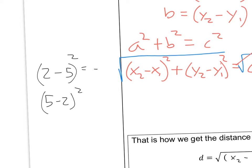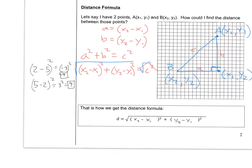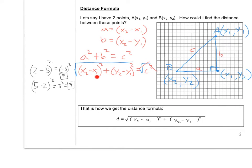Well, 2 minus 5 is negative 3, and negative 3 squared is positive 9, right? Well, 5 minus 2 is 3, and 3 squared is also positive 9. So because we're squaring it, it doesn't actually really matter, the order.